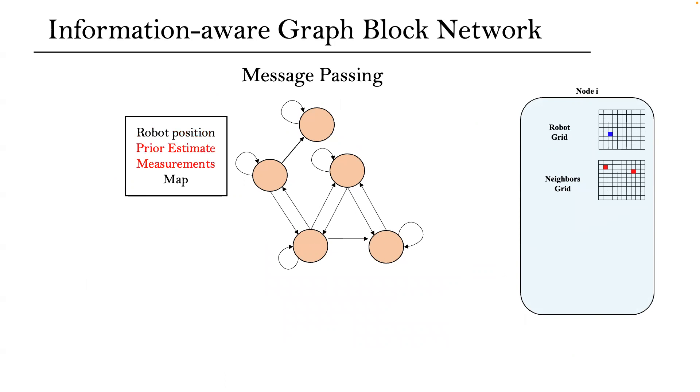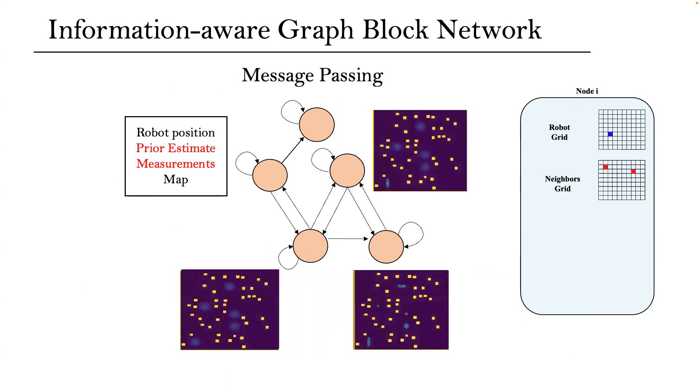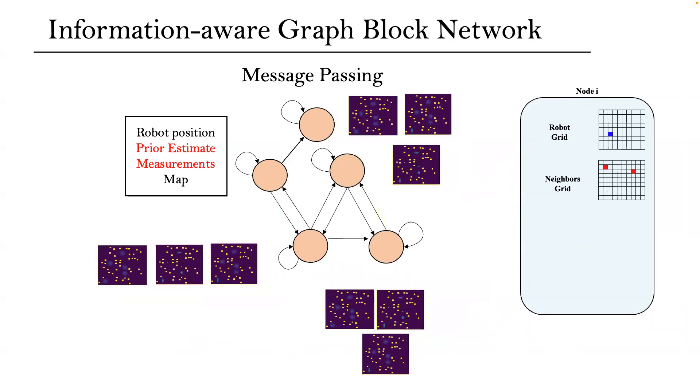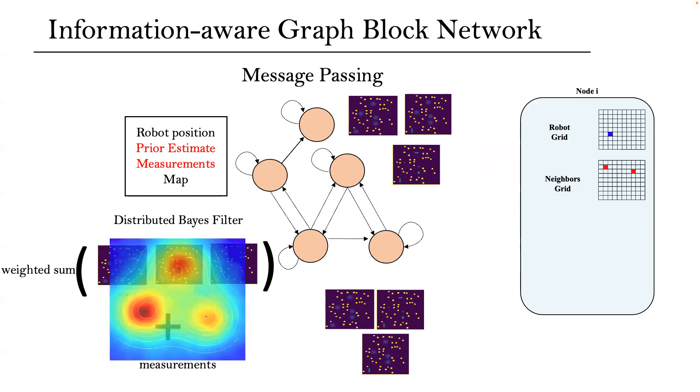Let's see how the network leverages the prior estimates and the measurements. In the distributed setting, we assume that each robot has its own estimate about the phenomenon of interest, like for example, the Gaussian distributions over the target's locations. Each node's estimate is then propagated through the graph. A new aggregation function computes the magnitude of uncertainty for each node, as a weighted sum of the incoming neighbor's estimates and then local measurements.